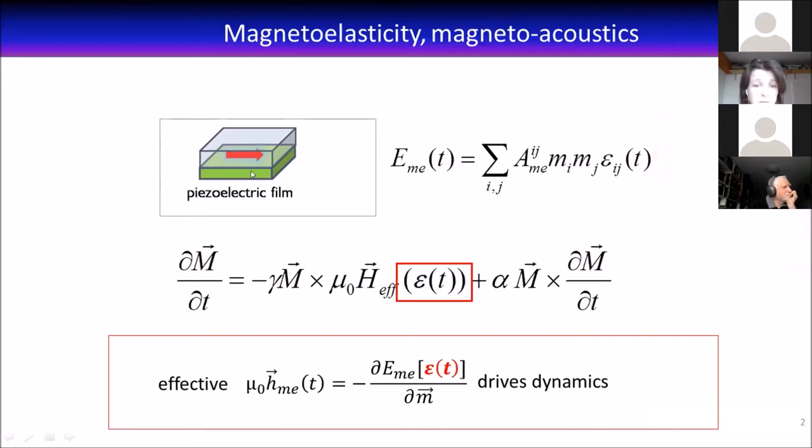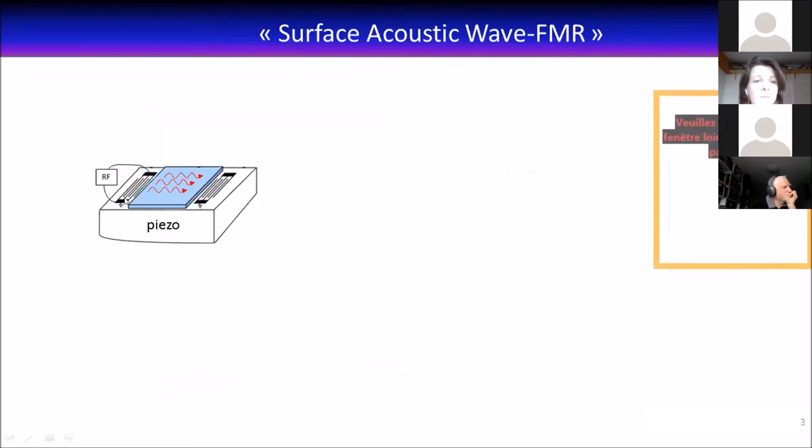These devices are typically made of an interdigital transducer, a metallic structure evaporated on a piezoelectric material. When you apply an RF voltage on these transducers, you generate a bidirectional surface acoustic wave going both ways that interacts with your magnetic sample. You can then detect the strain as a voltage on an opposite identical transducer in the time domain and in the frequency domain.